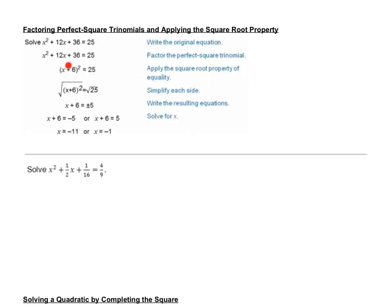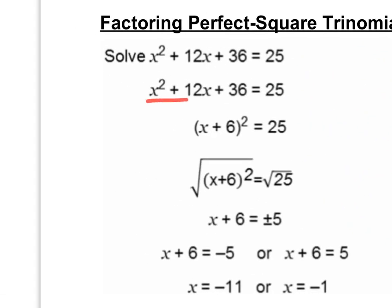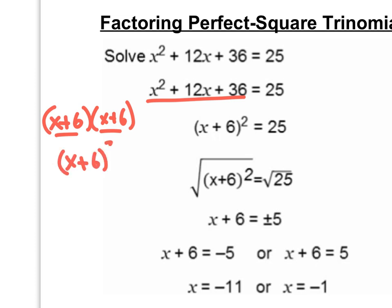This next example shows the steps of solving an equation for x. We have an original equation and we recognize that the left side is a perfect square trinomial. What two numbers add to 12 but multiply to 36? We can factor this as x plus six times x plus six, and since we have two of them, we write it as x plus six quantity squared. Then we apply the square root property to both sides, get plus or minus five, set up two equations, and solve for x.